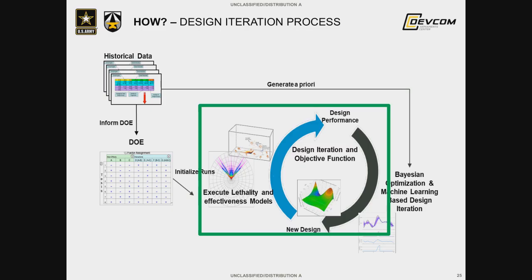All of this feeds back into the current design loop. Instead of running this loop as a full factorial multiple times, design of experiments and Bayesian optimization, fed through historical data, can tell us exactly which cases to run. We don't have to run a full factorial of every single case the customer wants — we can dive into the important points within our decision space.